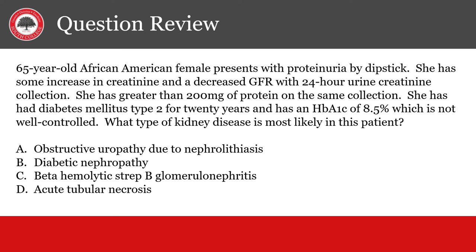A 65-year-old African-American female presents for proteinuria by dipstick. She has some increase in creatinine and a decreased GFR with a 24-hour urine creatinine collection. She has greater than 200 mg of protein on the same collection. She has had diabetes mellitus type 2 for 20 years and has an HbA1c of 8.5%, which is not well controlled. What type of kidney disease is most likely in this patient? The answer is diabetic nephropathy. Remember, protein out - to help you remember that nephropathy has protein spilling in the urine as albumin. Diabetes is the leading cause of nephropathy.